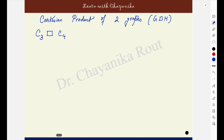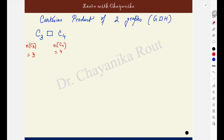Let us solve for some other graphs. Here we are finding out the Cartesian product of C3 and C4. First, note down their orders: the order of C3 is 3 and the order of C4 is 4. So the second graph has 4 vertices, meaning there will be 4 copies of the first graph. And the first graph has 3 vertices, so the second graph will have 3 copies. In the Cartesian product of these 2 graphs, you will find 4 copies of C3 and 3 copies of C4.